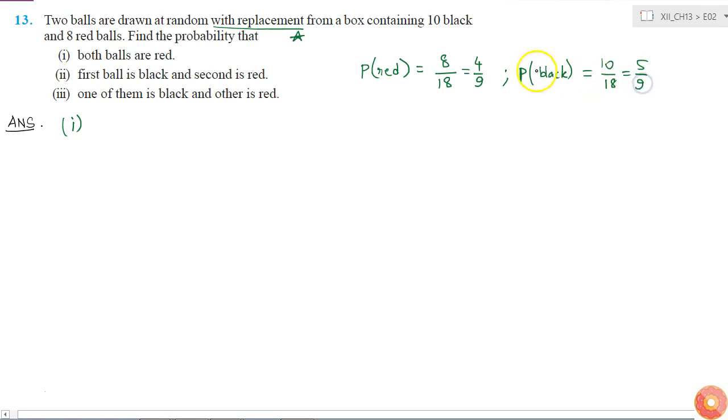Now we want that both balls should be red. That means the first ball should be red and the second ball should be red. Because they are independent events, I can write this as the probability of taking a red ball two times, so I'll square it. This is equal to 4 by 9 squared, which is 16 by 81.